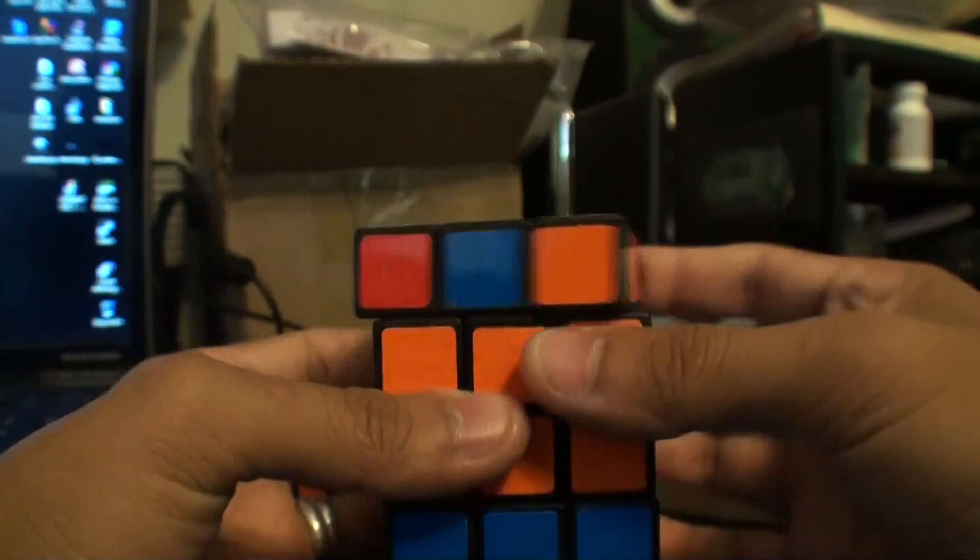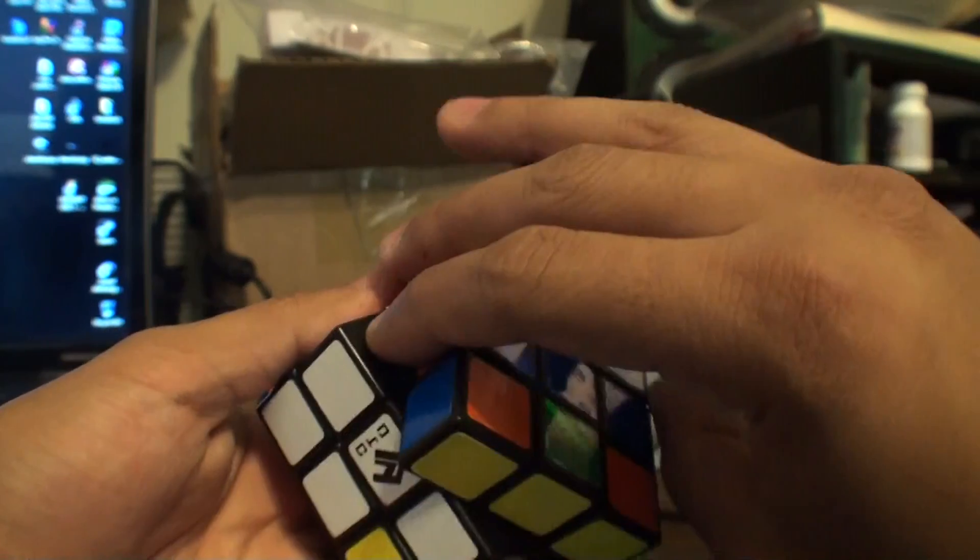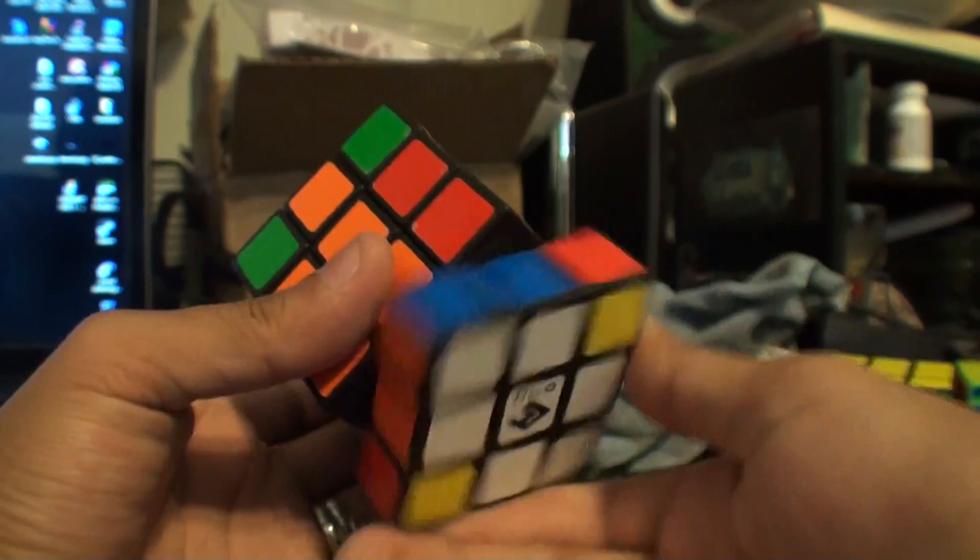So now we have three of the cross pieces done. And we have this last one up here. So we're going to bring that over. And since we really have no choice on messing these up, we're just going to go ahead and put it down.